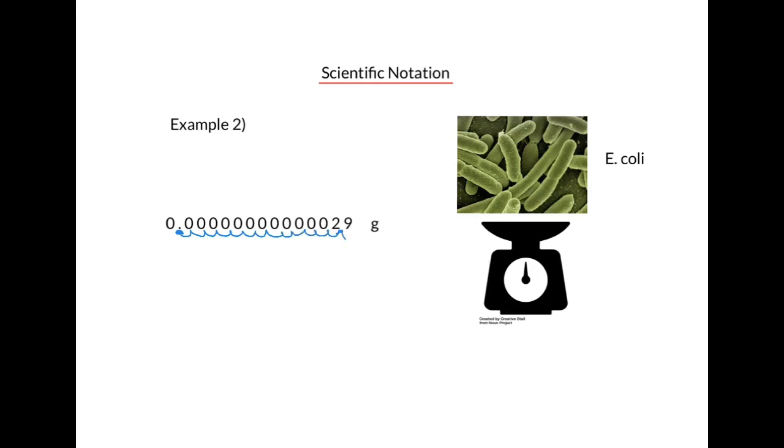So we write the non-zero digits with a decimal in between and multiply by a power of ten, in this case ten to the minus thirteen, because we move thirteen places to the right and negative means it's a very small number.